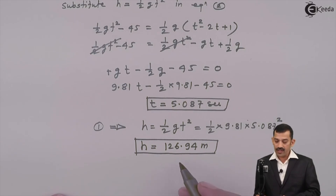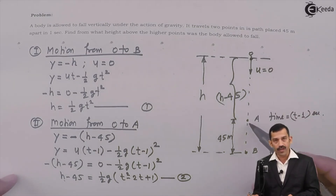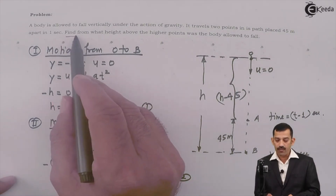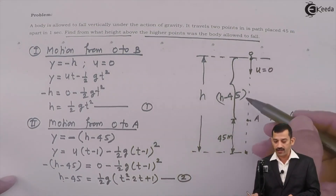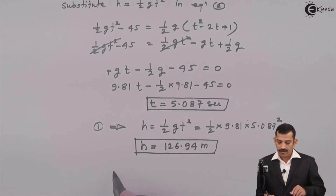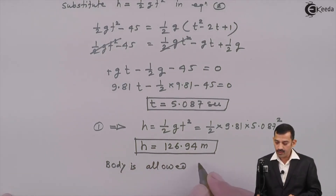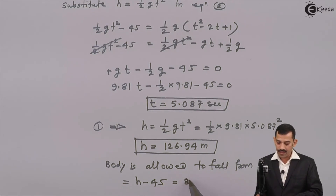But what the problem is asking is the height from where the body is allowed to fall above the higher point A, not point B. The particle is dropped from O, passes through point A, then through point B. Point A is the upper location and B is the lower location. The question asks: from what height above the higher point A was the body allowed to fall? That height is H minus 45 meters. Substituting H equals 126.94 meters, the final answer comes out to be 81.94 meters.